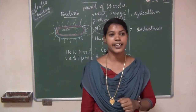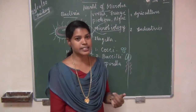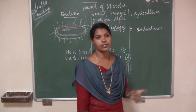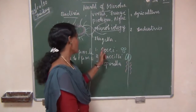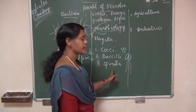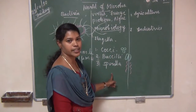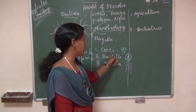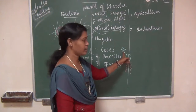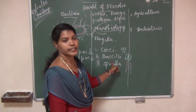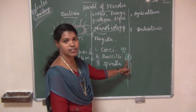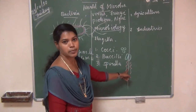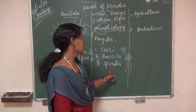Based on shapes, bacteria are classified into three types: coccus, bacillus, and spirilla. Coccus: spherical-shaped bacteria. Bacillus: rod-shaped bacteria. Spirilla: spiral-shaped bacteria.